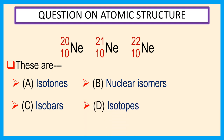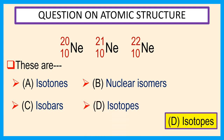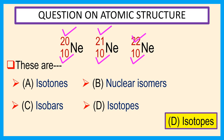The answer is d) isotopes. These atoms have the same atomic number, which is 10, but these atoms have different mass numbers, which are 20, 21, and 22.